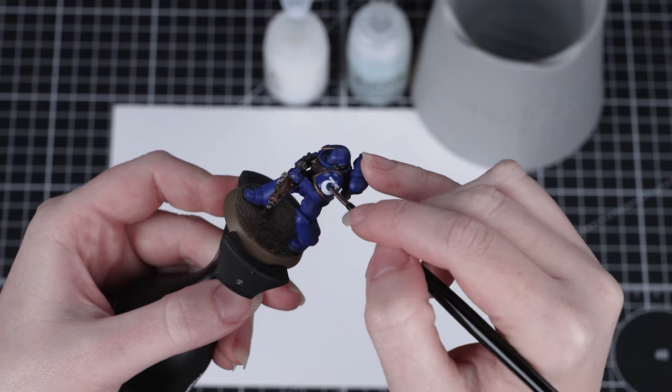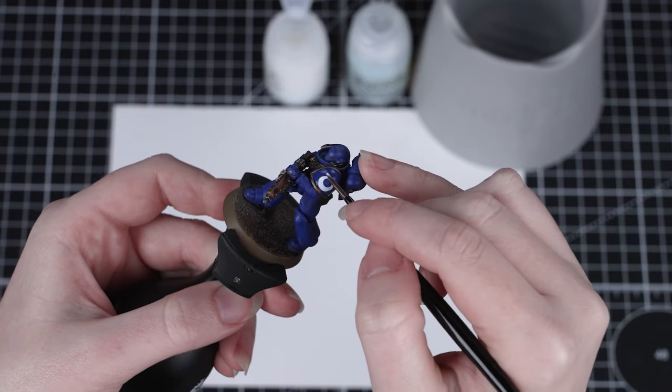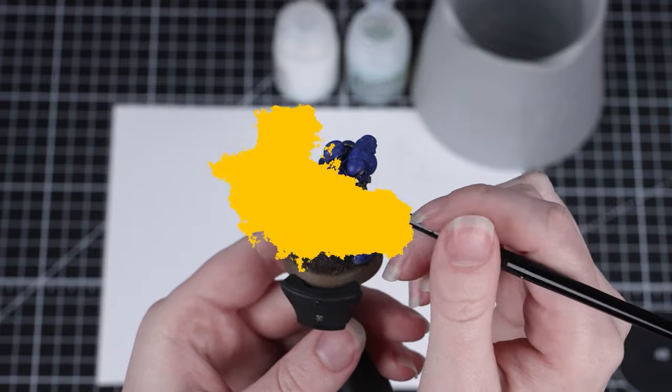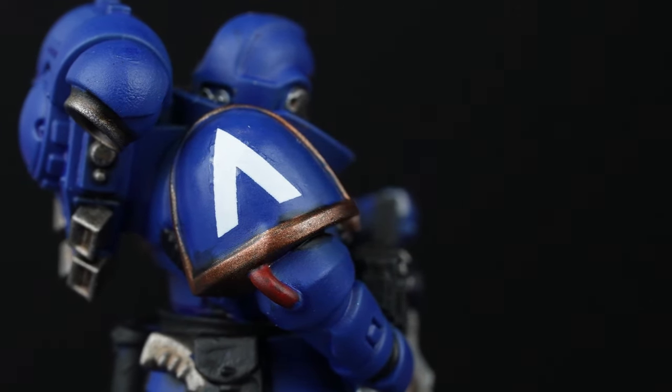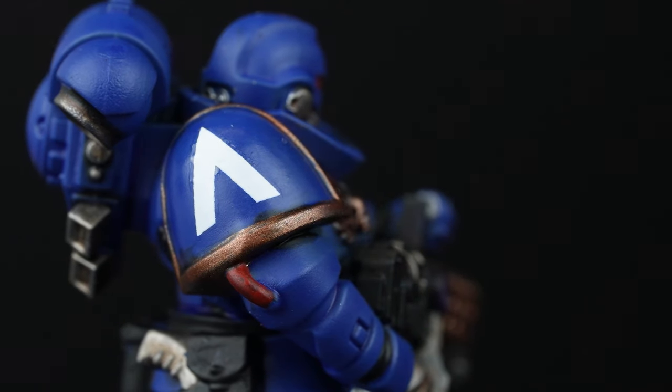Don't forget that you can add a couple of coats of Lahmier Medium if you're finding the area is still a little bit shiny. And that's all there is to it. Now you know how to apply transfers to give your miniatures that extra finishing touch.